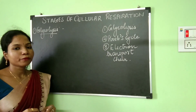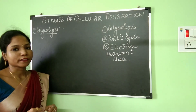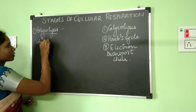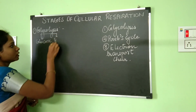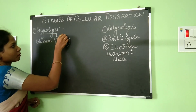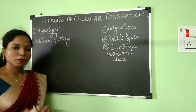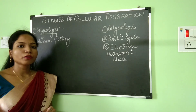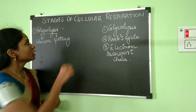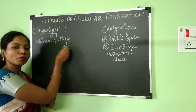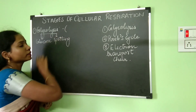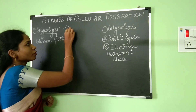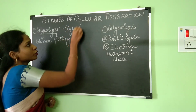Let's discuss about the first stage of cellular respiration, which is glycolysis. The word 'glyco' means glucose and 'lysis' means splitting. So during this process of glycolysis, what is happening is the glucose molecule is going to be broken down, or in other words, the glucose molecule is going to be split. Glycolysis is going to take place in the cytoplasm of the cell.